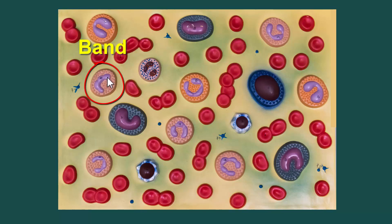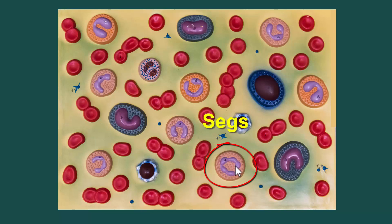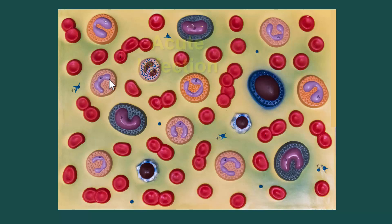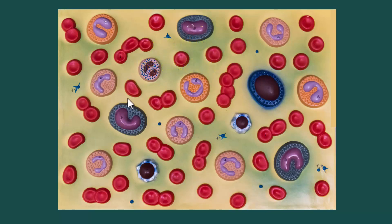A band cell — if you're looking at a CBC, a complete blood count, it'll be listed as a band. As neutrophils get more and more lobed, on a CBC they're often referred to as SEGS. Bands are for young neutrophils, SEGS for older ones. If we have a lot of bands, these are new neutrophils, so we probably have a new infection going on — these come about because of bacterial infections.